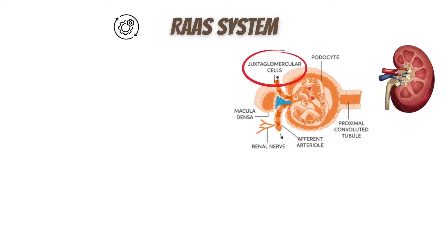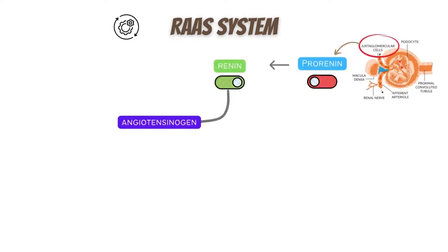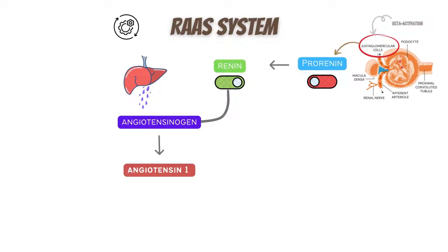First, the juxtaglomerular or JG cells, which are present in the kidney, secrete renin into the blood. Once renin has been released into the bloodstream, it can act on its target, angiotensinogen. Angiotensinogen is produced in the liver and is found continuously circulating in the plasma. Renin then acts to cleave angiotensinogen into angiotensin-1. But angiotensin-1 is still physiologically inactive; it acts as a precursor for angiotensin-2.